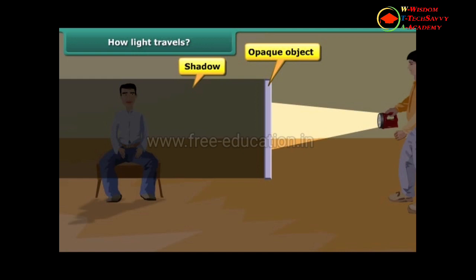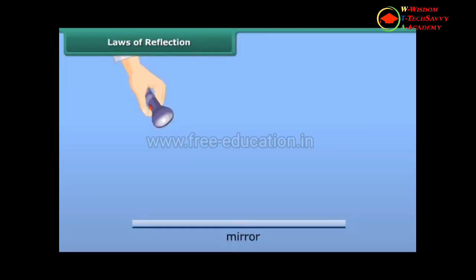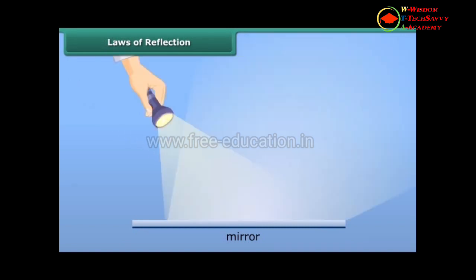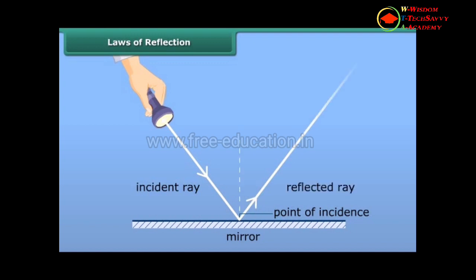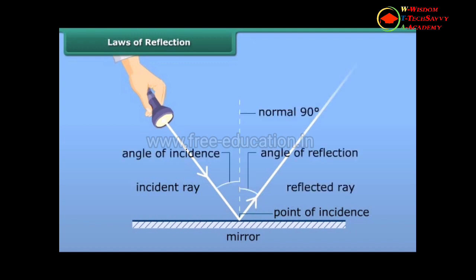This shows that light travels in a straight line — else we could have seen through the opaque object. The light travels in a straight line. Just as a ball bounces off a wall when we hit it, similarly the light bounces off objects when it strikes them. The most important fact is that the angle at which the light strikes an object is the same as the angle at which it gets reflected.